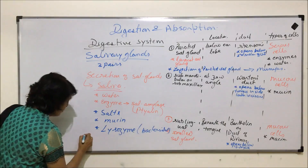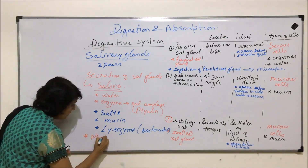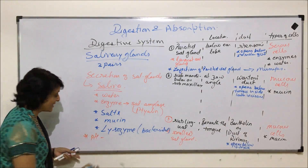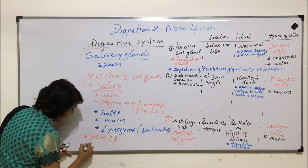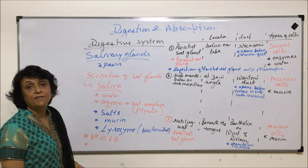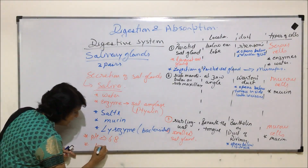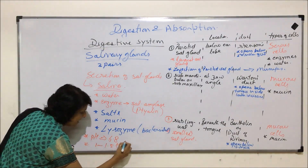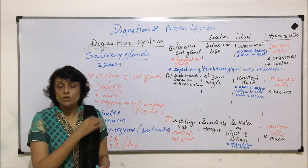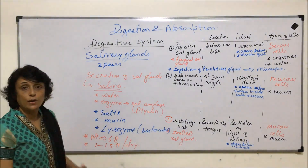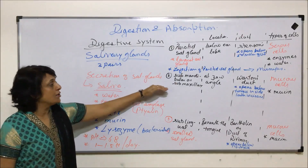Another important thing about saliva is its pH. The pH of saliva is slightly acidic at 6.8. The volume of saliva produced per day is about 1 to 1.5 liters — this is the normal volume produced per day.